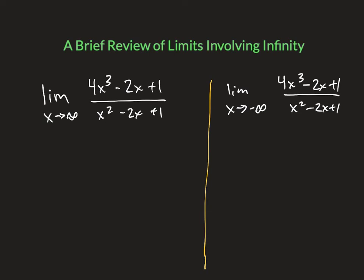I was asked to do a brief review of limits involving infinity. I'm going to look first at limits where x goes to either positive or negative infinity, as you can see in these two examples. We'll also talk about limits where we're heading towards a particular value when there's a vertical asymptote. When we're heading towards either infinity or negative infinity on the x-axis, we're talking about end behavior.